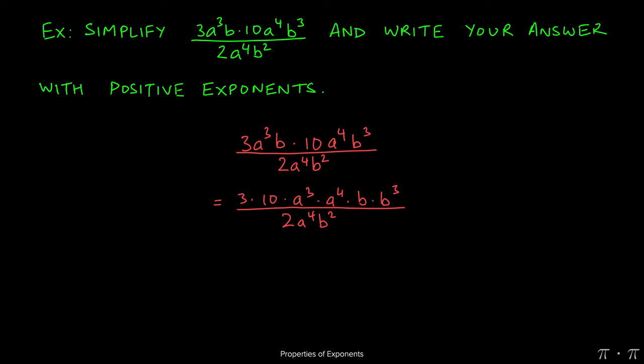At this stage, we can simplify 3 times 10 into the 30. Here, we notice that the bases are same, and we're multiplying, so we can add the exponents by the product rule. So a to the third times a to the fourth will be a to the 3 plus 4, which is 7.